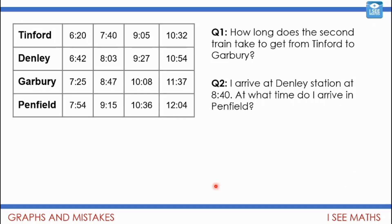For question one, the second train leaves Tinford at 7:40 and arrives at Garbury at 8:47 — that is one hour and seven minutes. It's not what the time is, but how long that span of time is. For question two, if I arrive at Denley Station at 8:40, I've missed the 8:03 train and have to wait until 9:27 — quite a long wait! That's why it's always good to check train times before leaving the house.